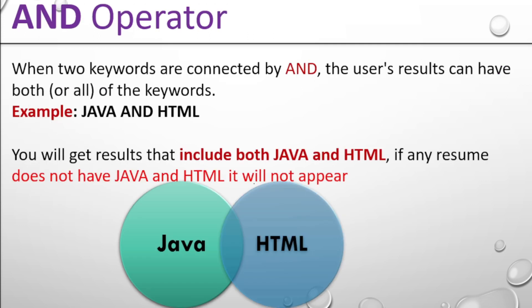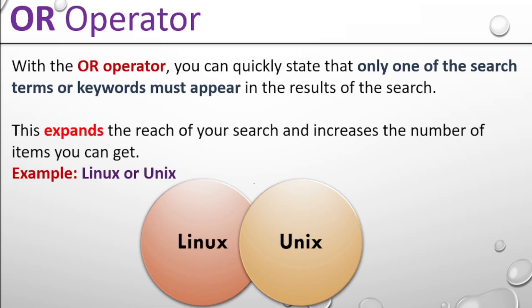The first operator is AND. When two keywords are connected by AND, the results will include all of the keywords. For example, Java AND HTML — you will get results that include both Java and HTML. When you search Java AND HTML, you will find both keywords in the resume. If any resume does not have both Java and HTML, it will not appear.